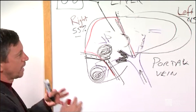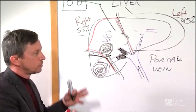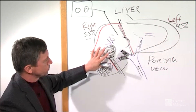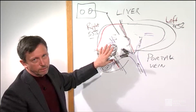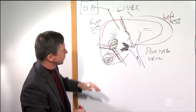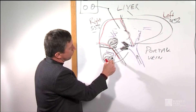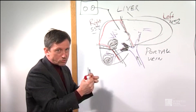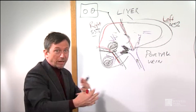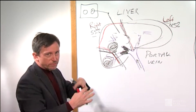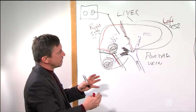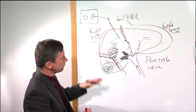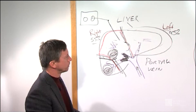Portal vein embolization is not done in all cases, but in some cases of what we call borderline resectable tumors, we may use it to help. There are also other strategies to shrink tumors in conjunction with surgery, such as putting beads — either chemotherapy beads or radiation beads — into the tumor to try to shrink it ahead of time and make the surgery a little bit easier. The liver is a very complex organ with a lot of blood vessels, and the size and numbers of tumors are very important.